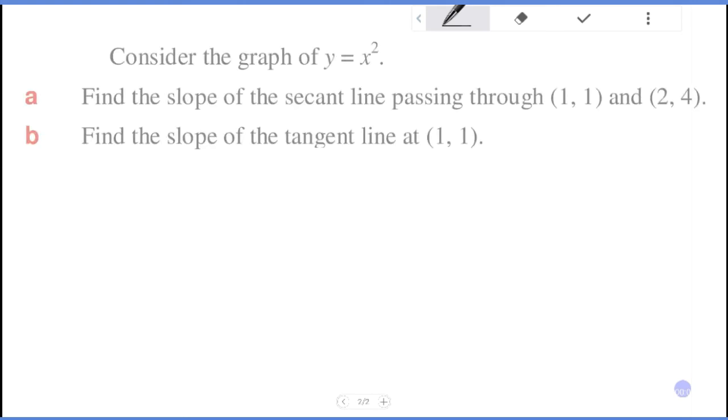Example: Consider the graph of y equals x squared. Part A: Find the slope of the tangent line passing through (1,1) and (2,4). Part B: Find the slope of the tangent line at (1,1).